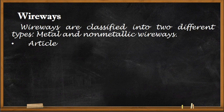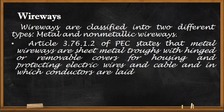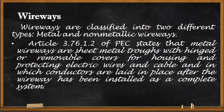Wireways are classified into two types: metal and non-metallic. Article 3.76.1.2 of the Philippine Electrical Code states that metal wireways are sheet metal troughs with hinged or removable covers for housing and protecting electric wires and cables, in which conductors are laid in place after the wireway has been installed as a complete system.